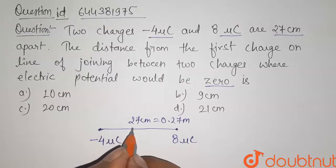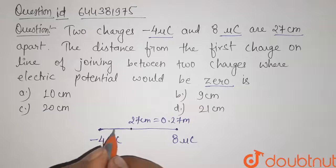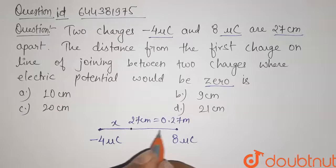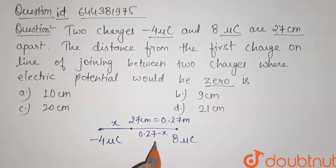Now we have to find the point between these two charges where the potential is equals to zero. So let us take the distance from first charge is equals to x, then the distance from second charge will be given by 0.27 minus x.